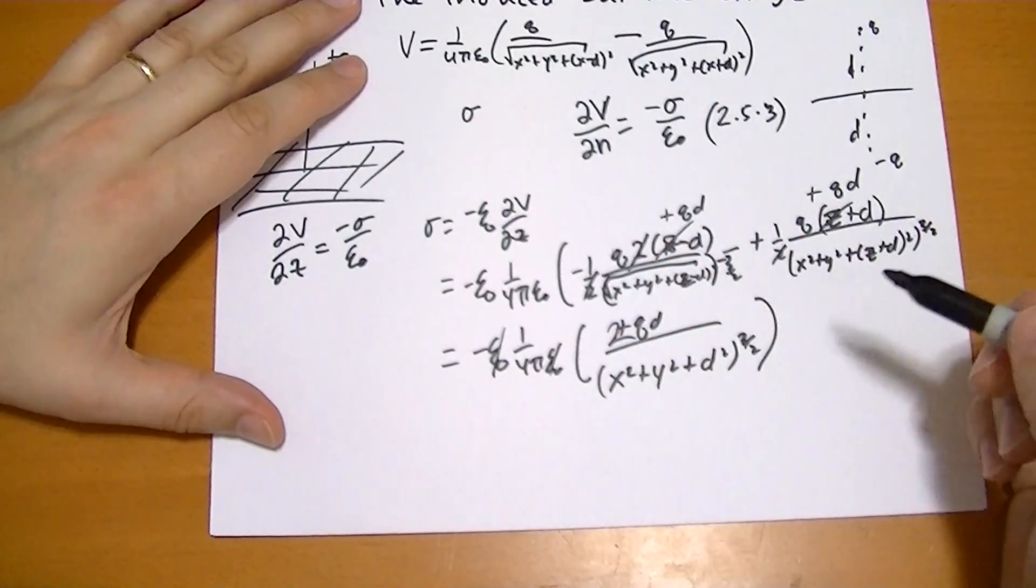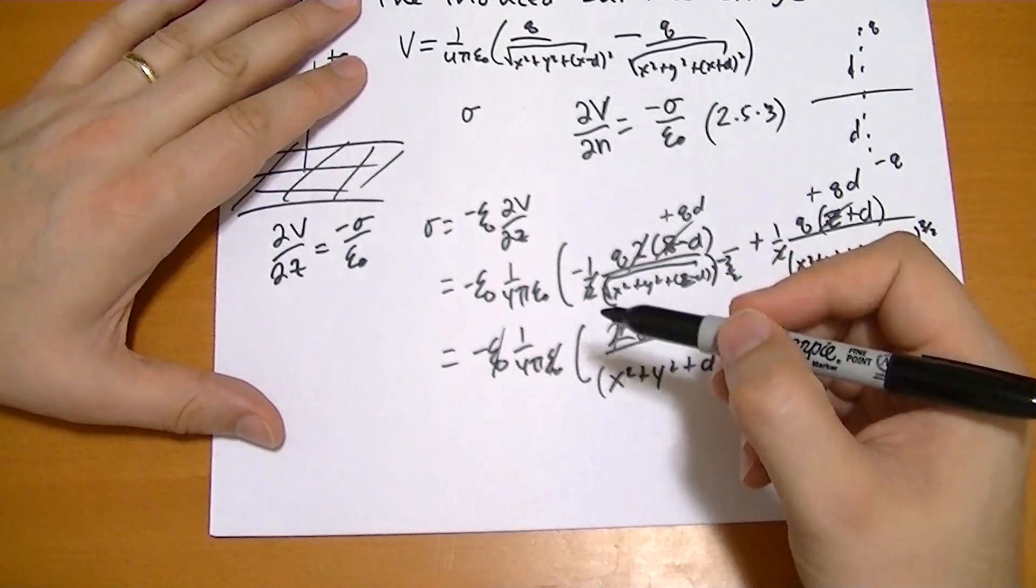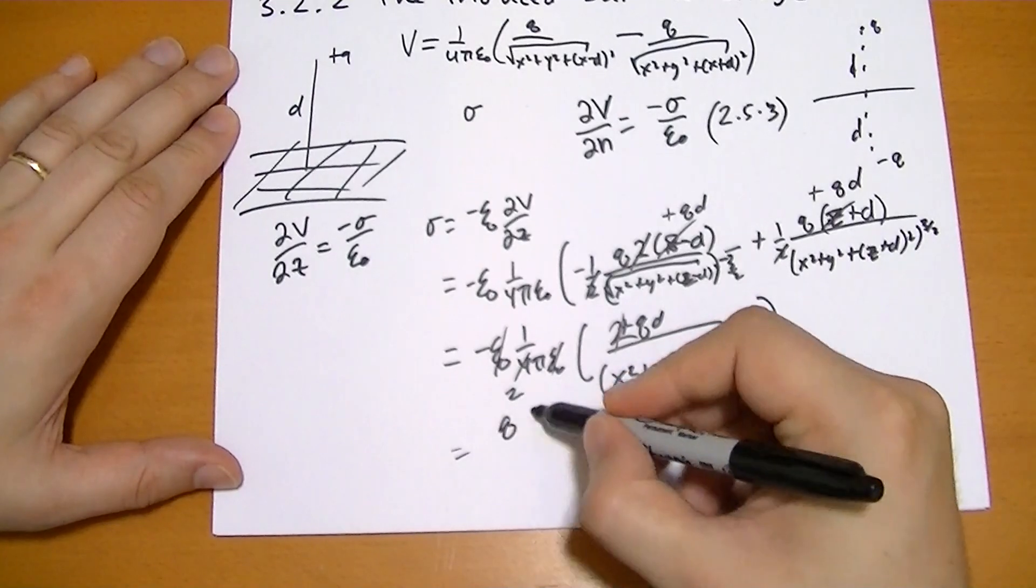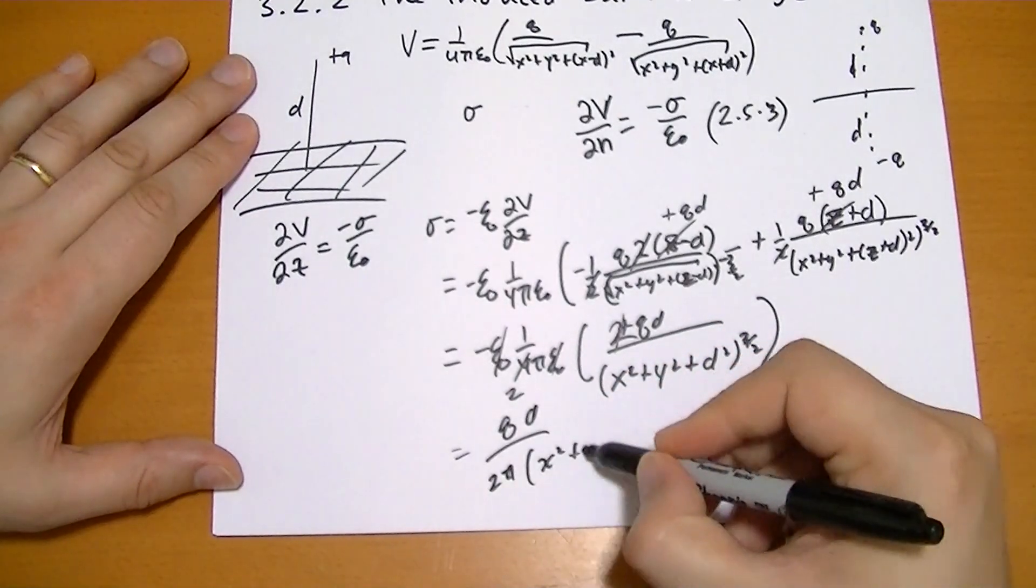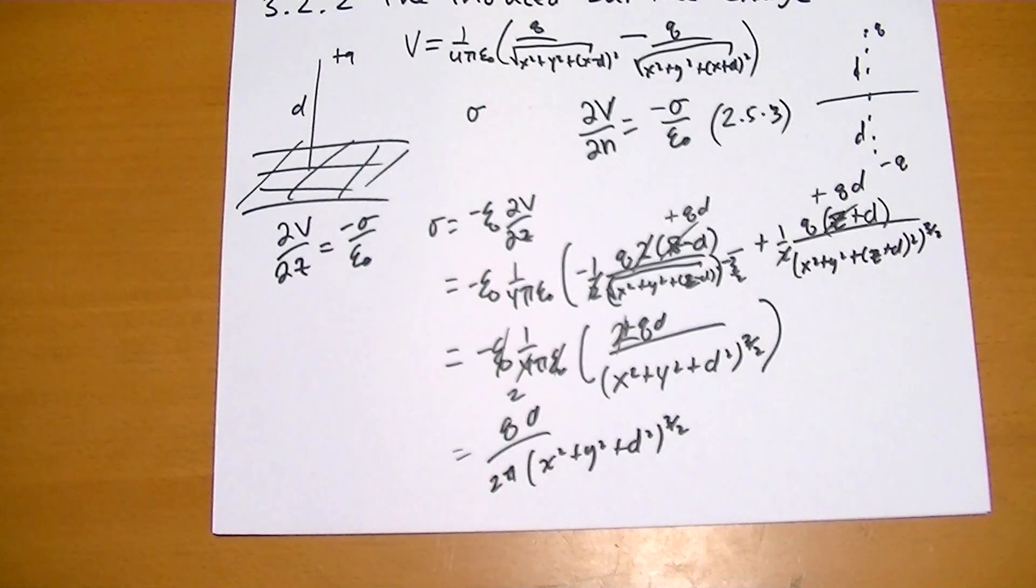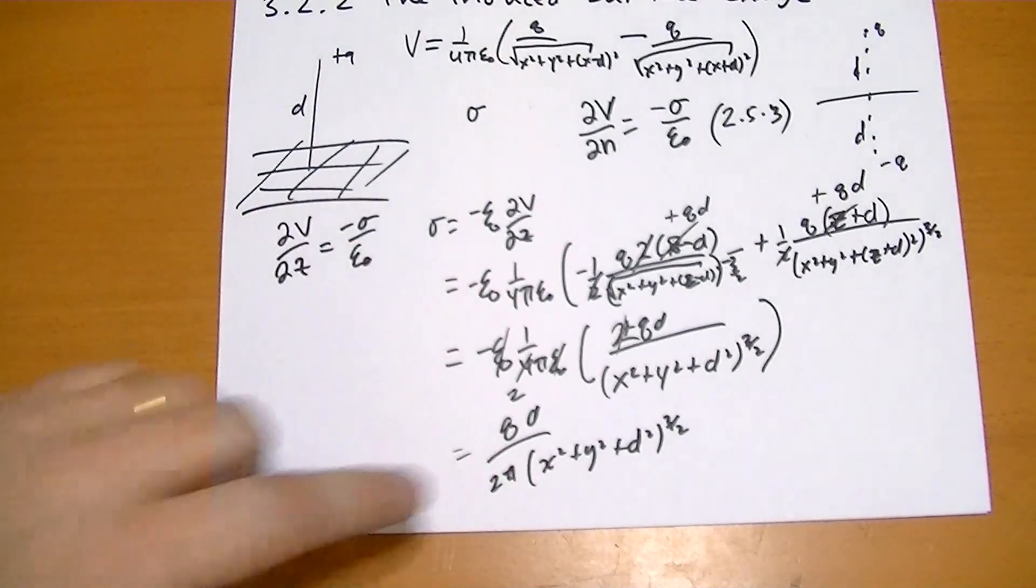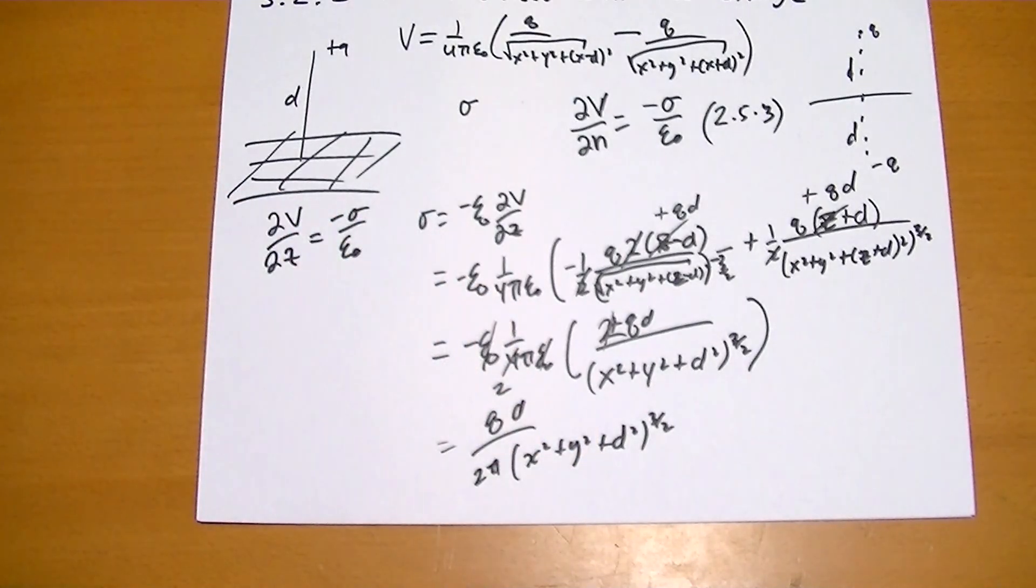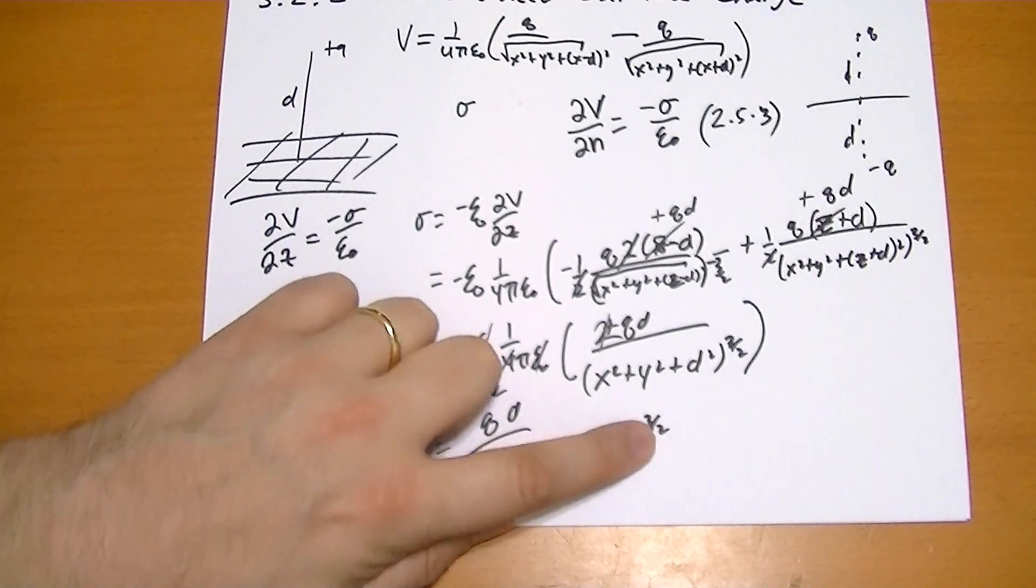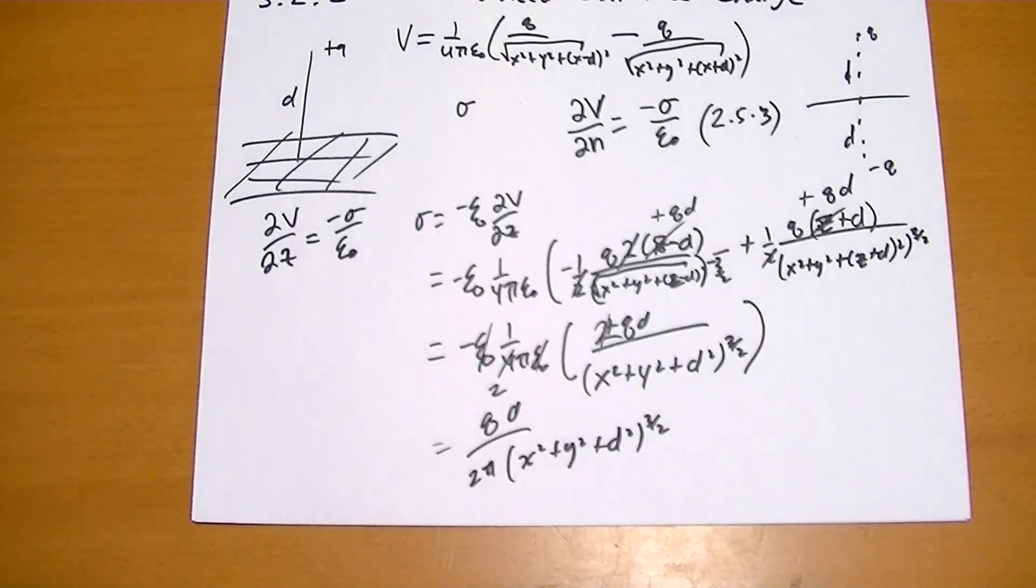So we cancel out some terms. It's equal to negative qd over 2 pi times x squared plus y squared plus d squared to the 3 halves. The maximum for this occurs when the minimum denominator occurs, which is when you have x and y to be zero. So right in the center there, you have the maximum charge density. I'm just checking the units here. You have squares of distances, square root, so that's distance cubed, and you have distance on top. So it's over distance squared, which is charge per unit area.